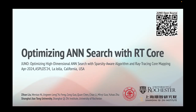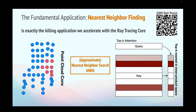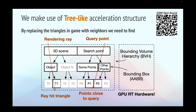This time, we will introduce our work to accelerate approximate nearest neighbor search with ray-tracing hardware. Surprisingly, ray-tracing hardware can be utilized not only in high-end video games, but in so many other applications — even popular chatbots. That's because a fundamental application lies in almost all intelligent tasks: nearest neighbor search. The ray-tracing hardware utilizes a tree-like acceleration structure to find intersection of rays and rendered objects fast.